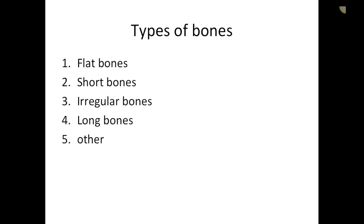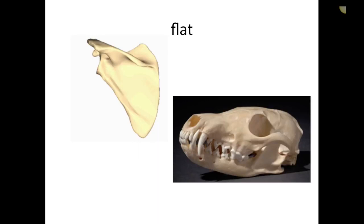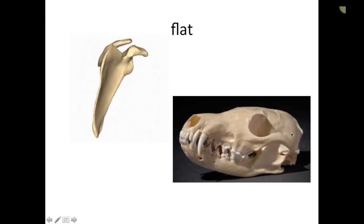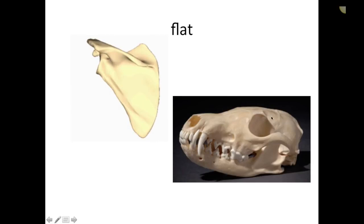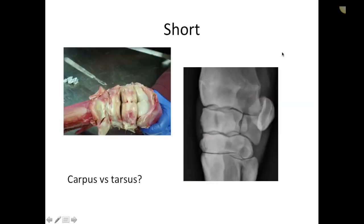There are various types of bones: flat bones, short bones, irregular bones, long bones, and a miscellaneous category. Examples of flat bones include the scapula — called the shoulder blade in humans — and many bones that make up the cranium, such as the frontal bone. Short bones make up the carpus and tarsus — the bones within the carpal and tarsal joints. The carpus is the wrist and the tarsus is the ankle when comparing to humans.